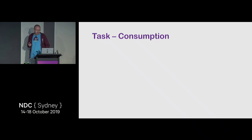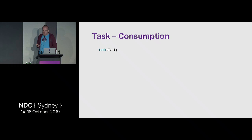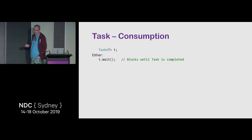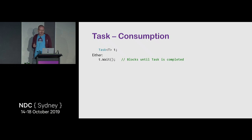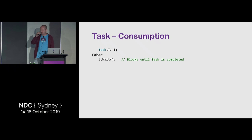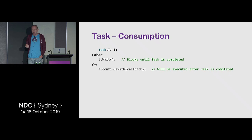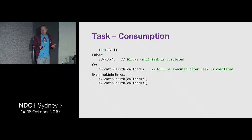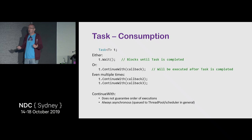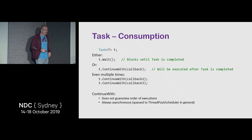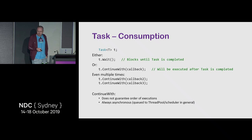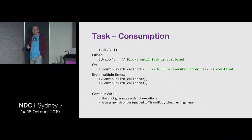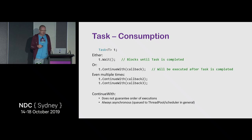For consuming a task: you can call T.Wait, which typically creates a ManualResetEvent that gets signaled when TaskCompletionSource calls SetResult, SetException, or SetCanceled. Or you can use the non-blocking way with ContinueWith, providing a callback — 'when you're done, call me back.' Multiple consumers can hook up to the same task. Execution order is not guaranteed, and it's always asynchronous.